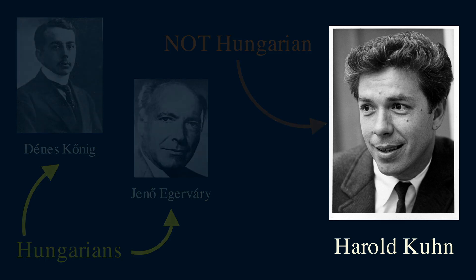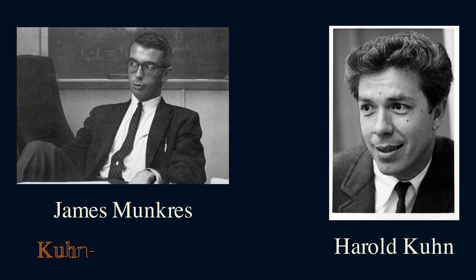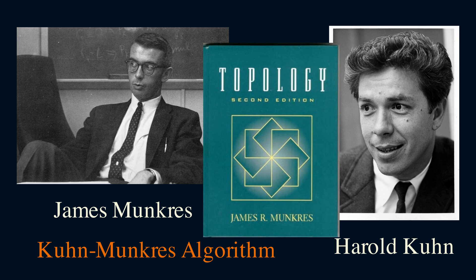A bit later on, another American mathematician named James Munkres looked at this algorithm and proved the runtime is polynomial. So sometimes the Hungarian algorithm is also called the Kuhn-Munkres algorithm. I first heard of Munkres when I was an undergrad studying topology. Munkres is the author of a very popular topology textbook that's widely used, so I thought it was a pretty cool connection when I saw the name Munkres pop up in this problem.